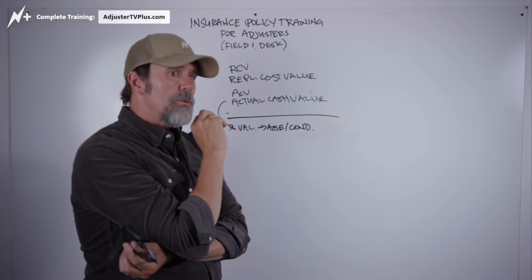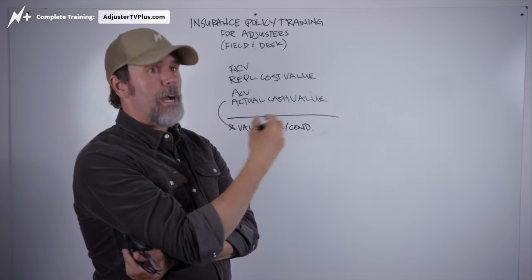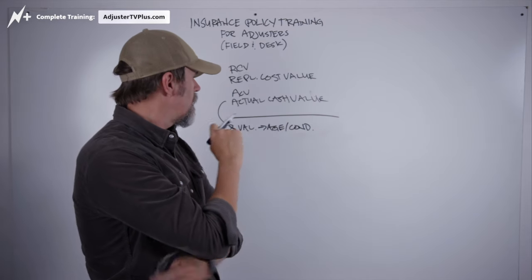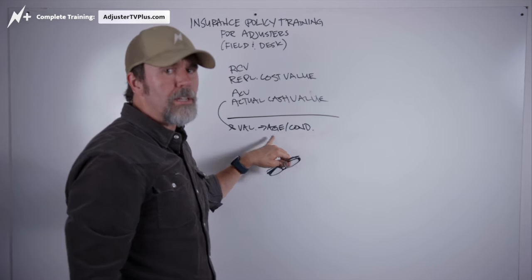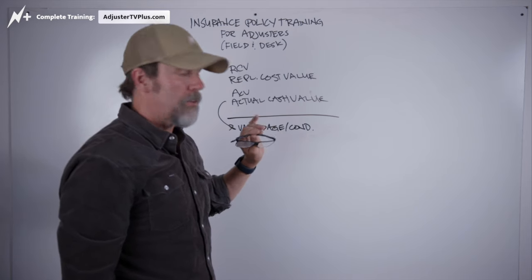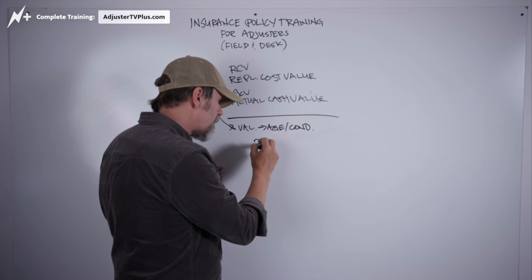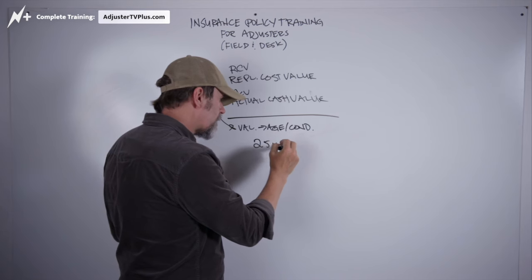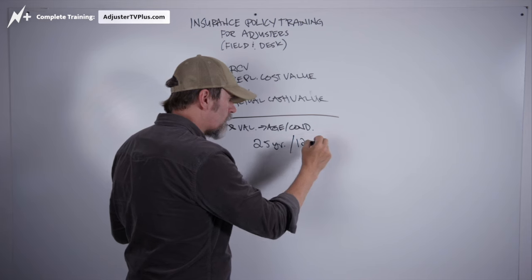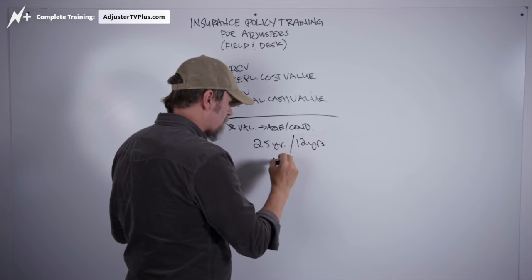If the roof is 25 years old and it looks like it's brand spanking new, I might make an adjustment for above average condition, but generally speaking, I want to do a straight line depreciation on age. It's 25 year shingle. We'll say, and it's 12 years old and it's 48%. It's about a half.